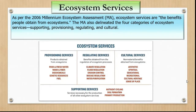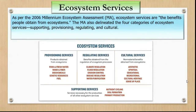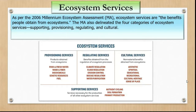Provisioning services are the products we obtain from an ecosystem. These include food — mainly from agriculture, though also from forests — freshwater through the hydrological cycle, where glacial melt and evaporation provide freshwater to ecosystem components including humans. We also get wood, firewood, fiber, biochemicals, genetic resources, and fuels. All these fall under provisioning services.